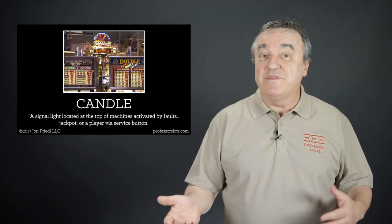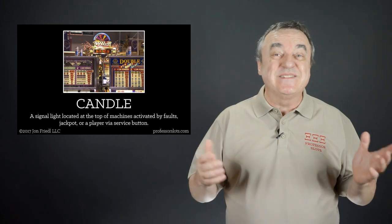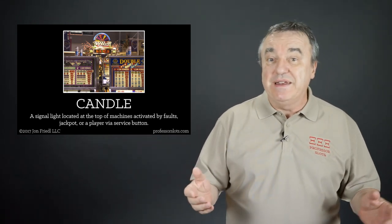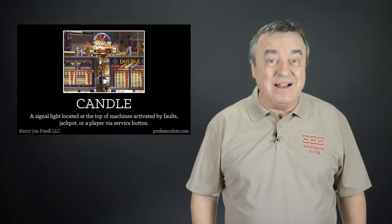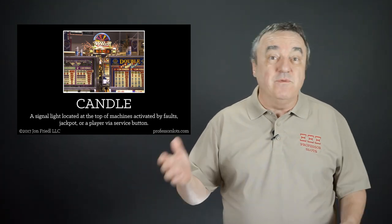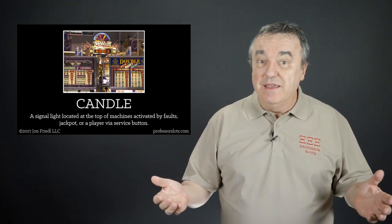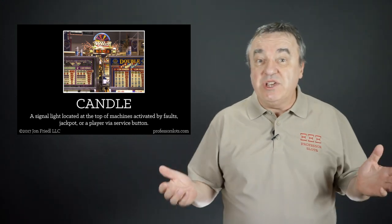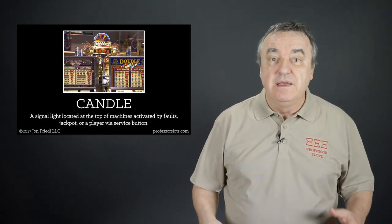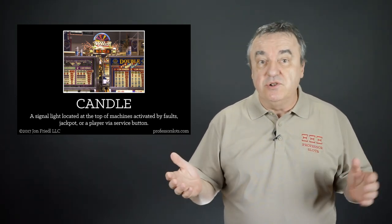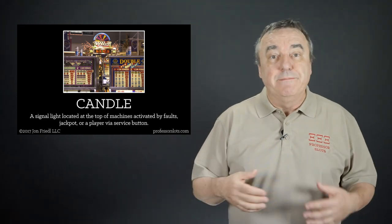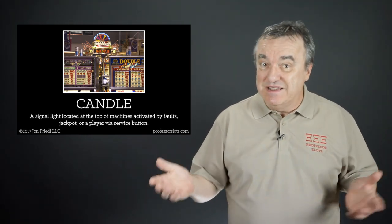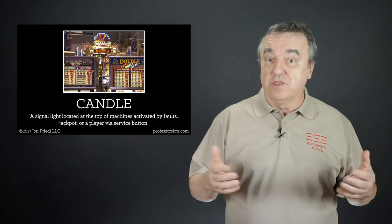Candle. Located at the top of a slot machine is a signal light. It can be activated by a player via a service button on the machine's console, activated automatically when a jackpot requires a hand pay to be provided by a casino operator, or if the machine is having a mechanical problem. Mechanical issues can include being out of paper, paper jams, tilt condition, and other unplanned maintenance issues internal to the machine.